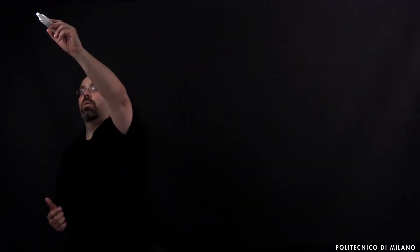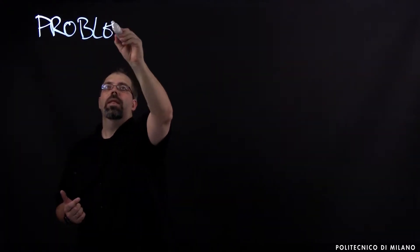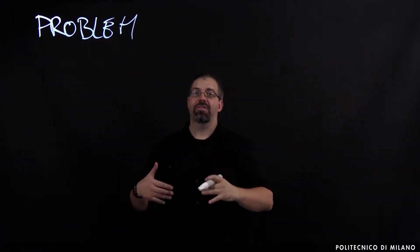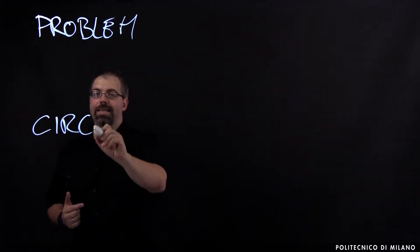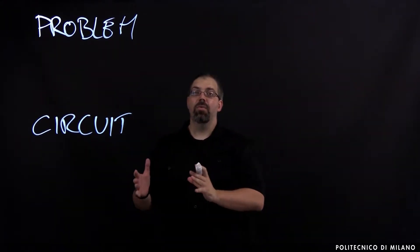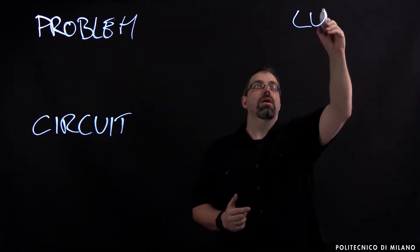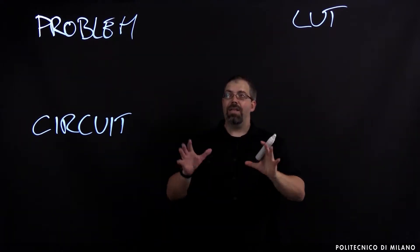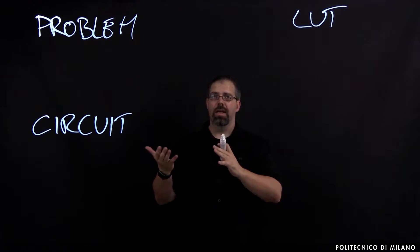What we are going to see now is how to configure a lookup table. Basically, what we have to do first is to have a problem that we are willing to solve or have been asked to solve. This problem is going to be translated into a circuit, and this circuit is going to be translated into the lookup table configuration. Now that we have this schema in mind, we can try to see how we can define a problem.